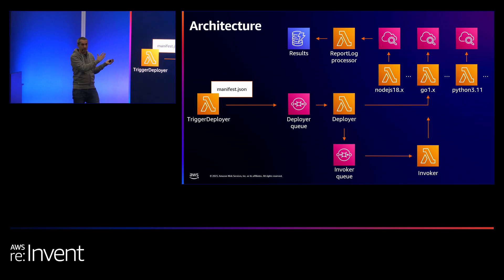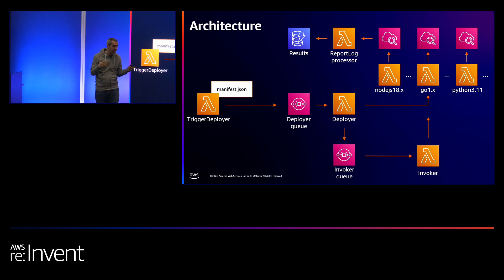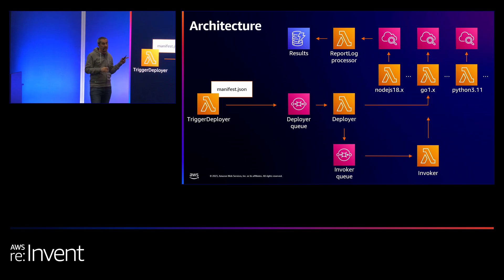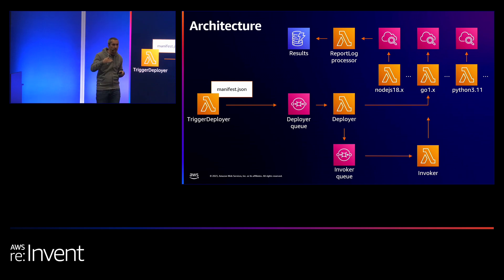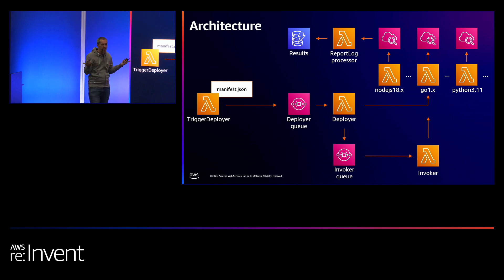Once all data is in the DynamoDB table, we run a query to build a JSON result file and commit it to Git — and that's what you see on Lambda Perf. It's a fully serverless architecture, everything is automatically triggered at 9 AM every day, and it's highly scalable — adding more runtimes or combinations is straightforward since everything is asynchronous.